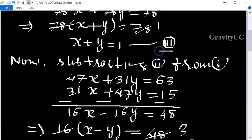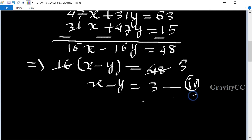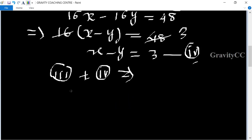Now we are adding equations 3 and 4. Adding equation 3 plus 4, we get x plus y equals 1 and x minus y equals 3. The y terms cancel and 2x equals 4.